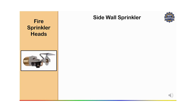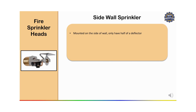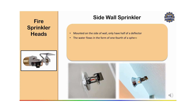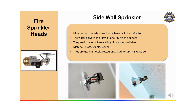Then we have the sidewall sprinkler, which is mounted on the side wall and has only half of a deflector. It is mounted on the wall and distributes water horizontally, making it ideal for areas with limited ceiling space or irregular shapes. It is installed on the sidewall with the deflector facing outward. Water flows in the form of one-fourth of a sphere. They are installed where ceiling piping is unavailable and are used in hotels, restaurants, auditoriums, and hallways. Sidewall sprinklers are suitable for narrow or irregularly shaped rooms.